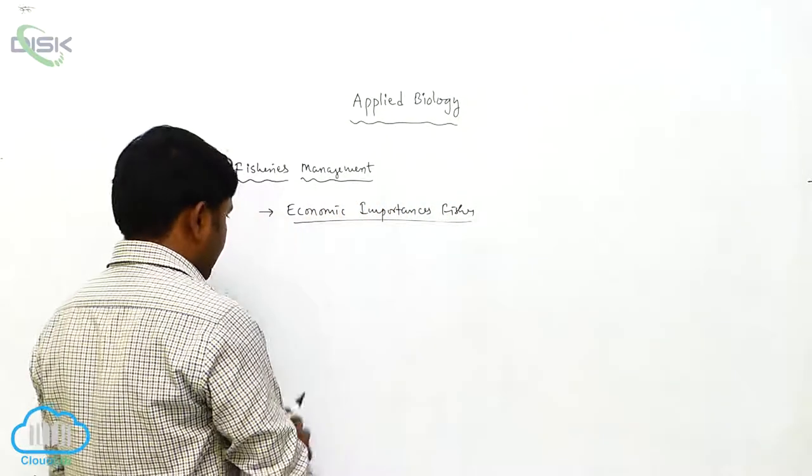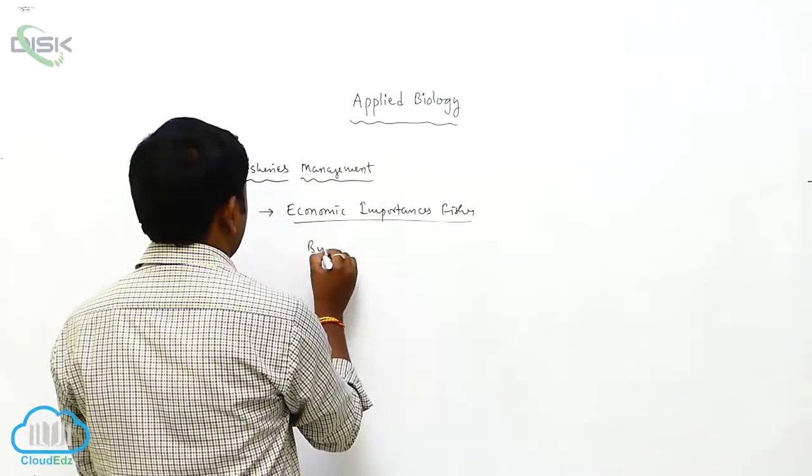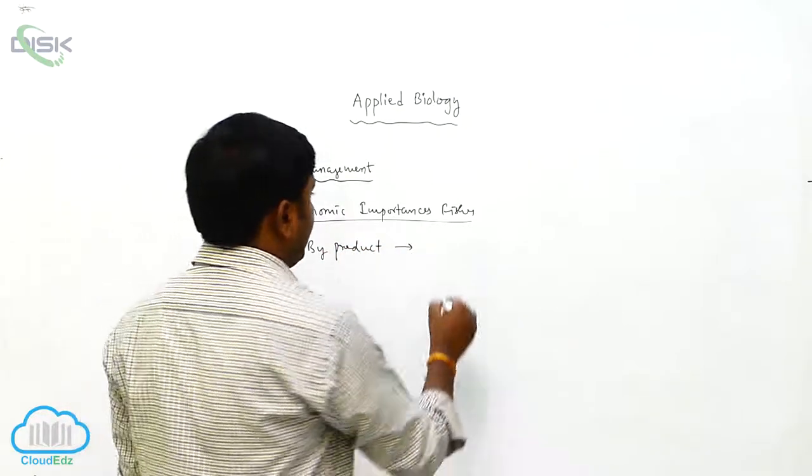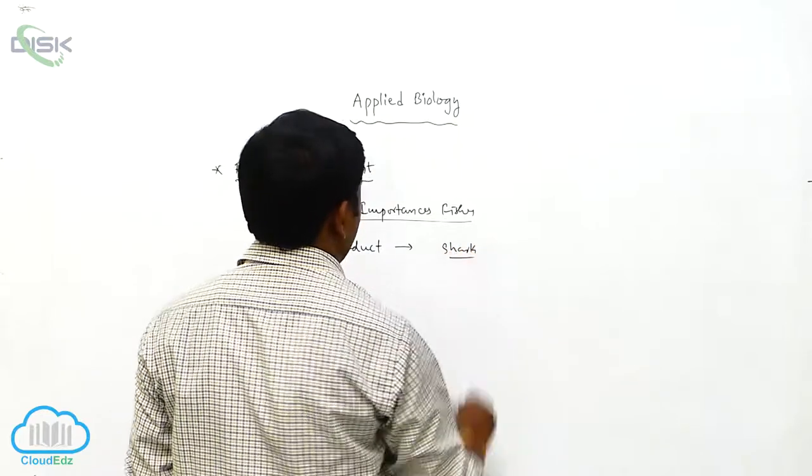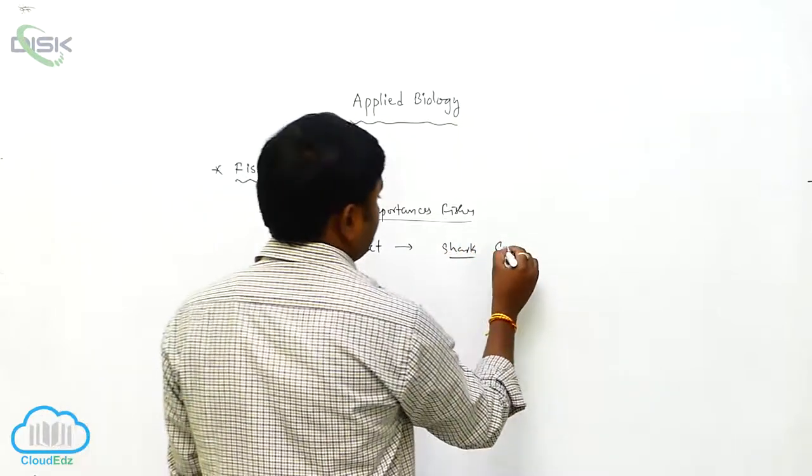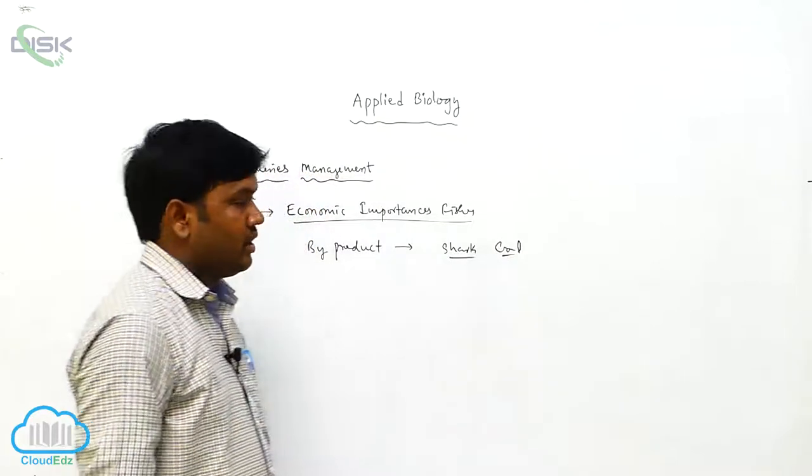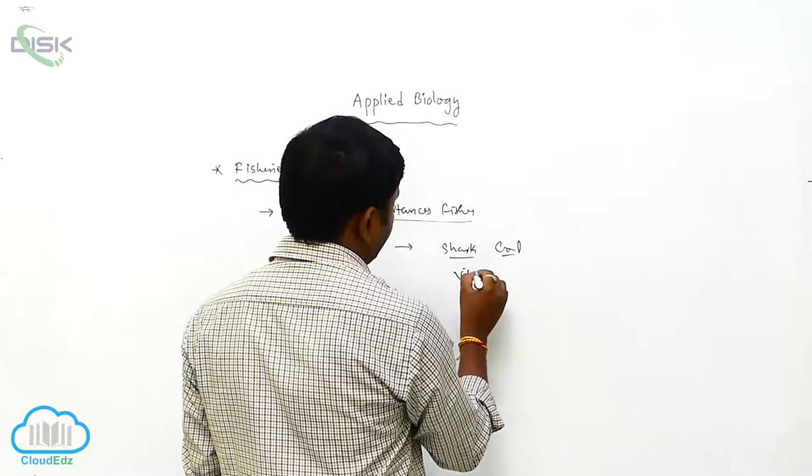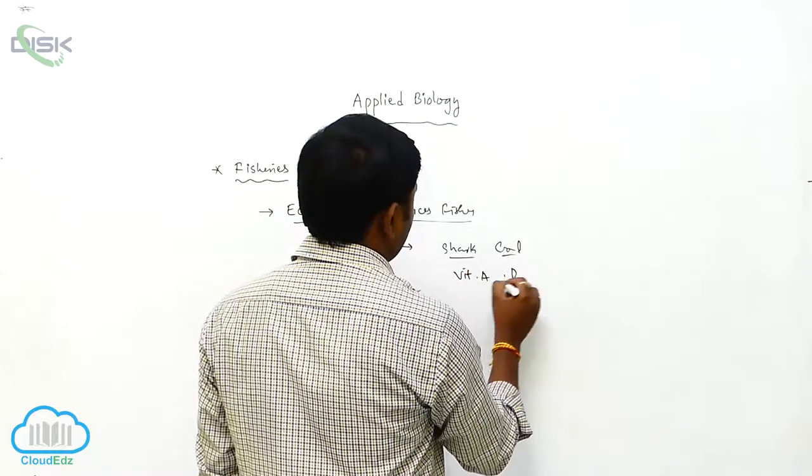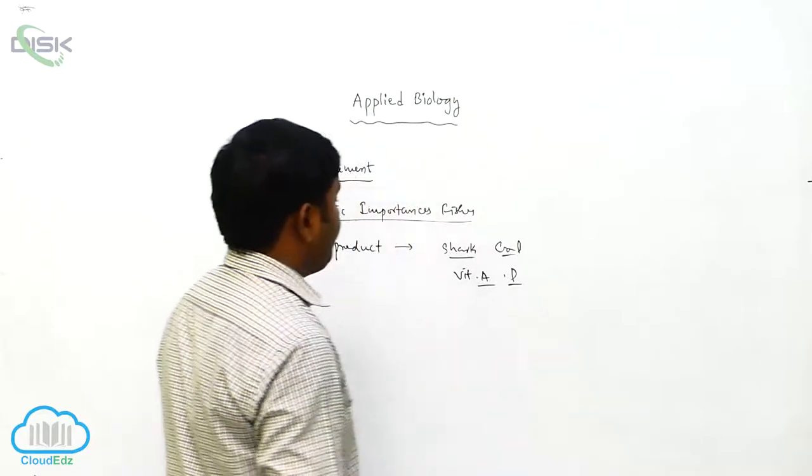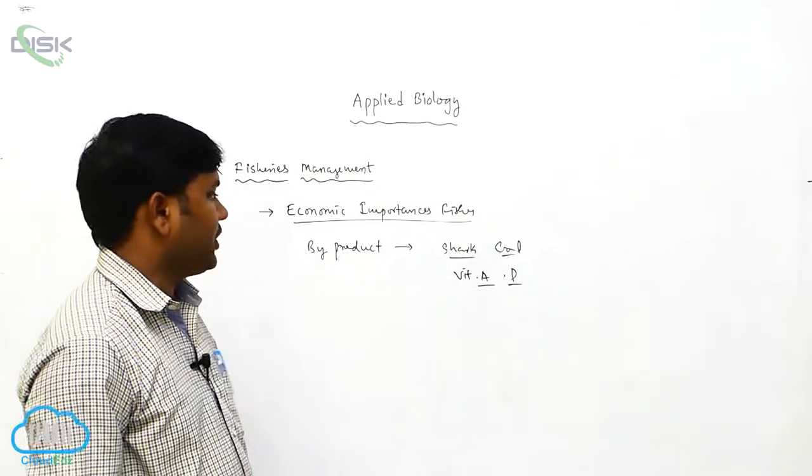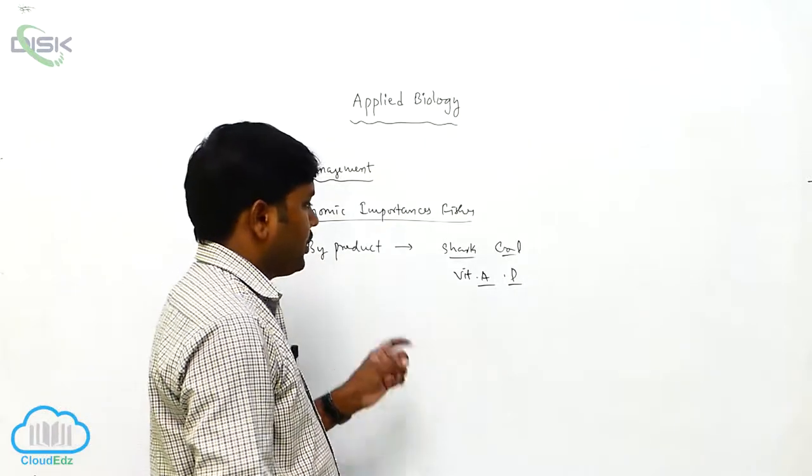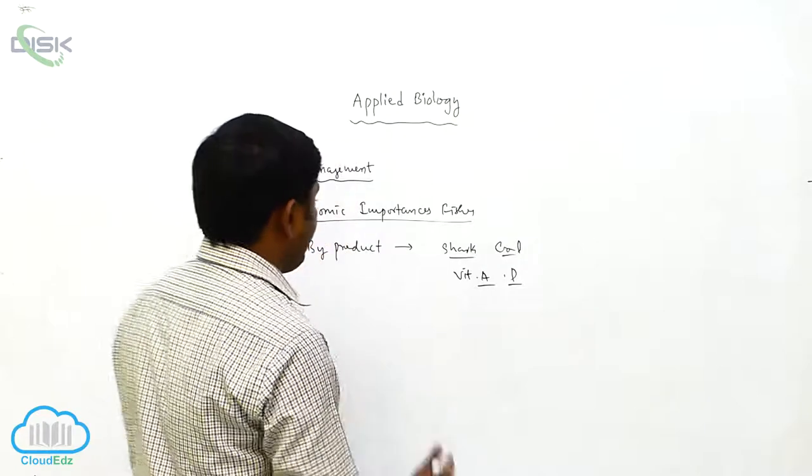And as well as, the next is by-products of the fish. See here, the shark and cod fishes have vitamin A and D, so they have very high protein efficiency or protein molecules in that food.